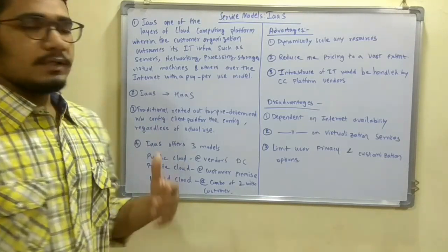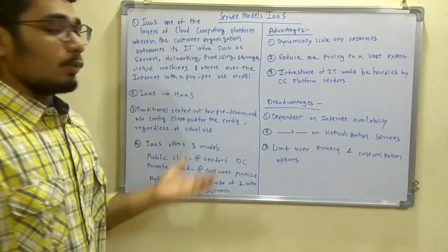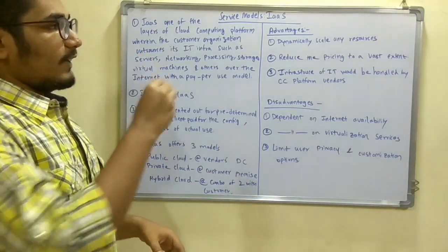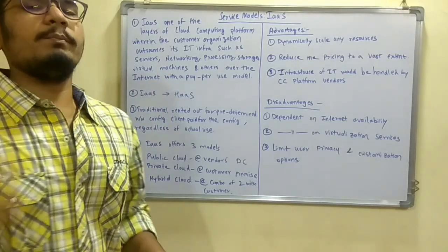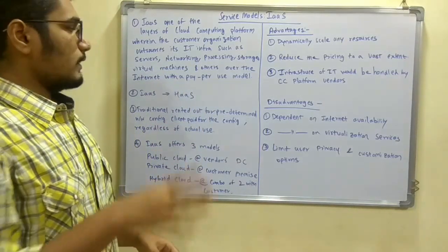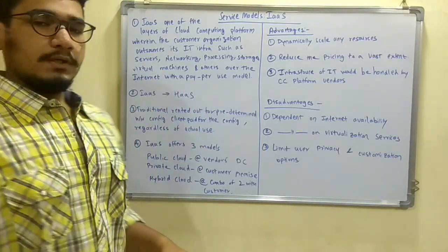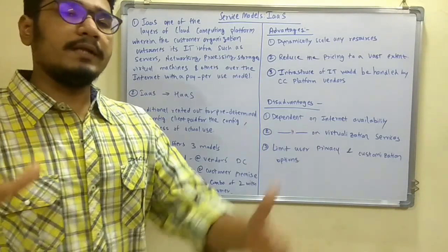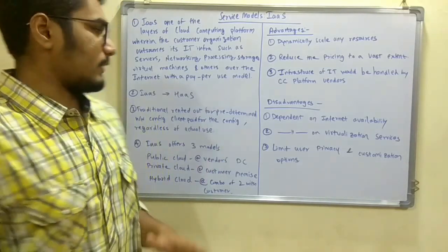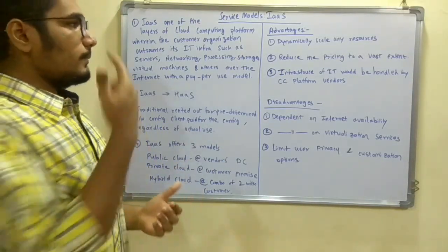This includes servers, networking, processing, storage, virtual machines, and others over the internet. While using IaaS, you pay with a pay-as-you-go pricing model — meaning if you pay a certain amount you get those services, and if you pay more you get additional services beyond the previous tier.